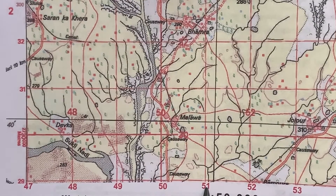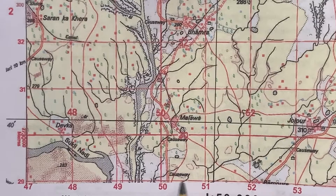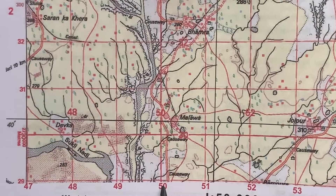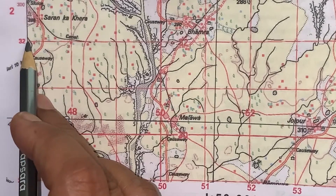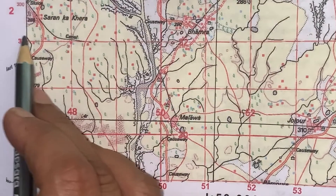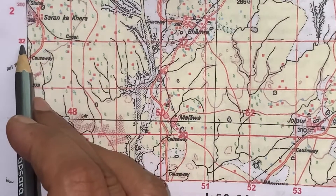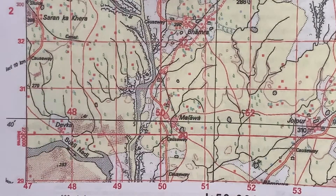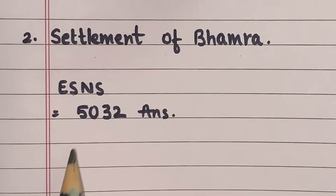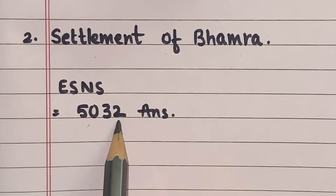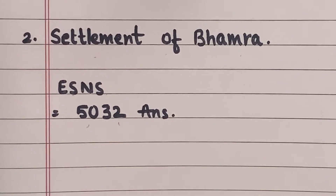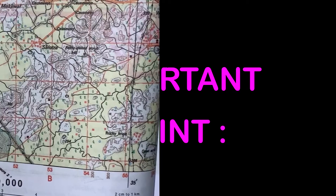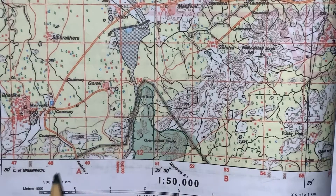We will see that it falls between Eastings 50 and 51, so we will take the previous number, that is 50. In the same way towards Northings, it falls between 32 and 33, so we take 32. Thus the answer will be 5032. The most important point you should always remember is that in any given topographical map, if the numbers are increasing towards the East direction, these numbers are known as Eastings.